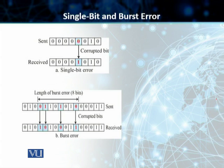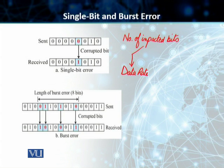In this particular case, you need to understand that the number of bits that get impacted depends on two things. The first thing is your data rate. What is the data rate of the data you are transmitting? The second thing is the duration of the noise signal or the duration of the noise source.